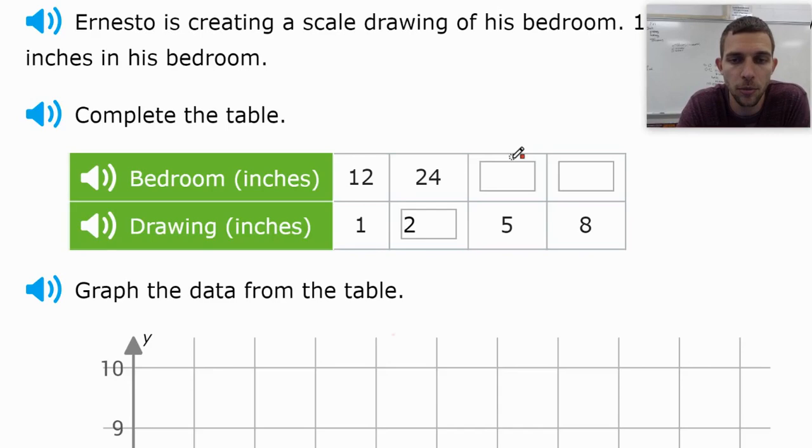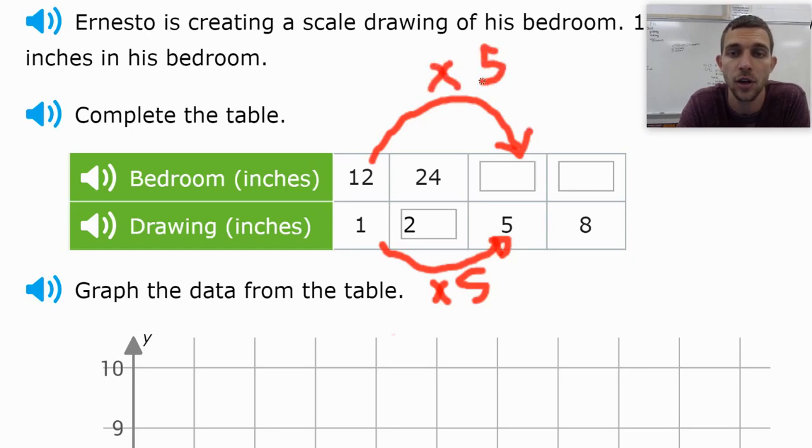In this problem, we see that we can go from 1 to 5, and we know that 1 times 5 is equal to 5. So we need to do the same thing on the top and take 12 times 5, which is going to give us 60.